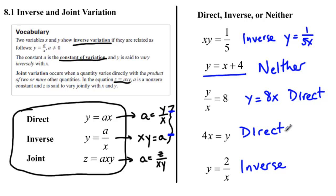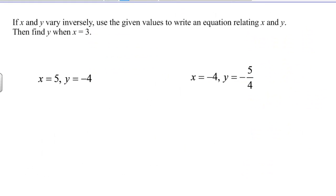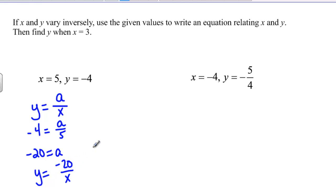So that's the first step is identifying what type of variation do we have. Here we say if x and y vary inversely use the given values to write an equation relating x and y and then find y when x equals three. So the first thing we're going to do is say that it varies inversely which means y equals a divided by x. I then take my x and y values and plug them in so negative four equals a over five and I figure out a and in this case if I multiply both sides by five I get negative twenty. Since that's my constant my new equation is y equals negative twenty divided by x.